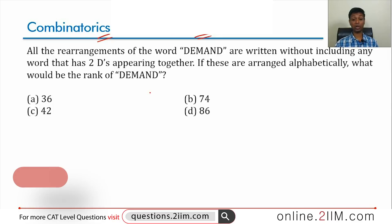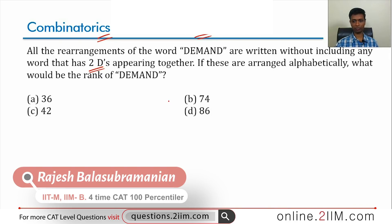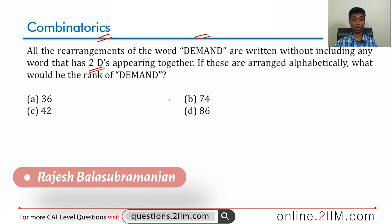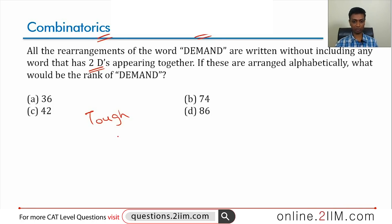All rearrangements of the word DEMAND are written without including any word that has the two D's appearing together. If these are then arranged alphabetically, what would be the rank of DEMAND? It's a wonderful question because it's a tough question where you need to be very meticulous, very careful, and go step by step in calculating each of these numbers.